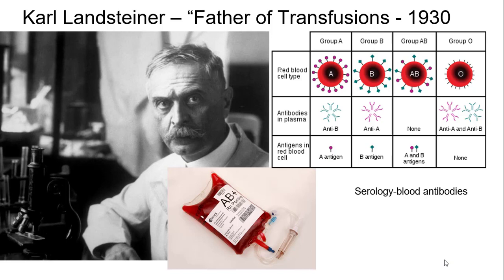Because if you have certain types of blood — blood type A, blood type B, AB — you have positive, you have negative, you can only get certain other types of blood. If you're type O, that's great because you can give blood to a lot of different people, but you can't get blood from anybody in the other groups. And before him, we really didn't know this.